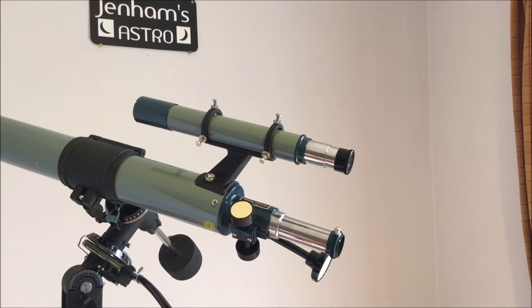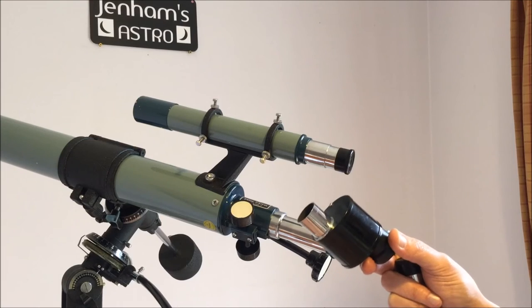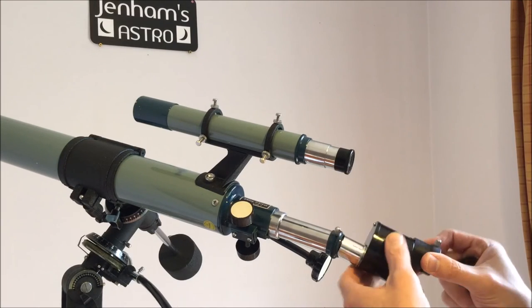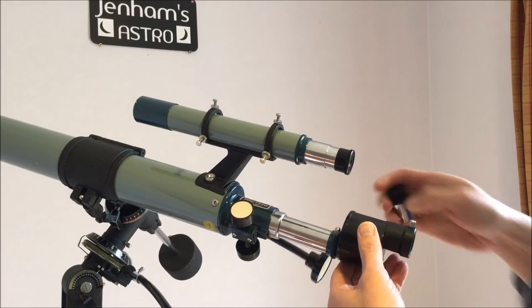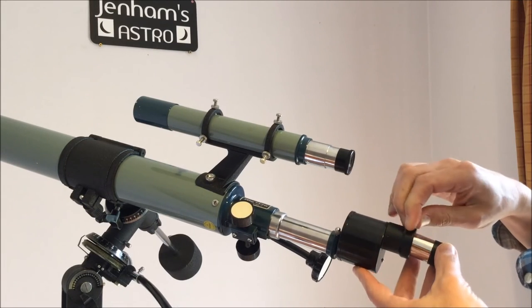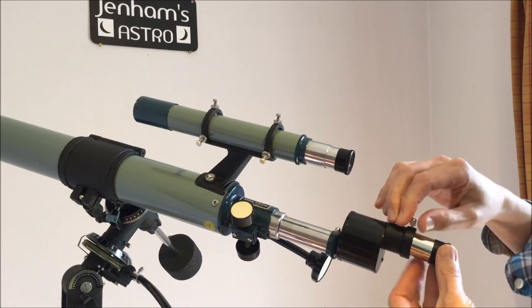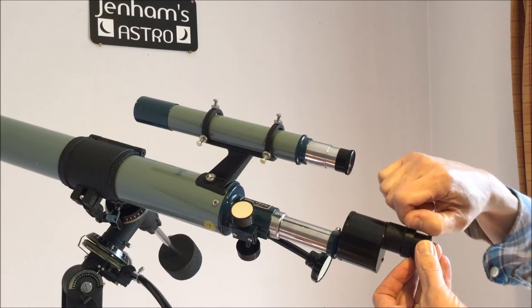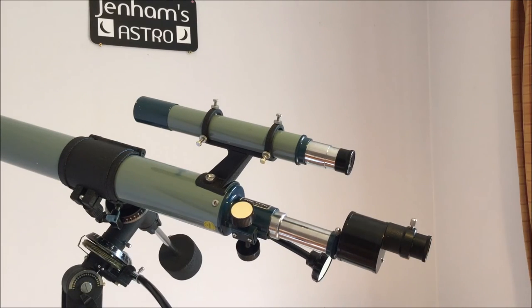So you fancy a bit of bird watching or other terrestrial viewing? Well, the scope came with a porro prism. So you can put that into the draw tube, put the eyepiece in the other end, and there you go. The image is turned the right way up for daytime viewing.